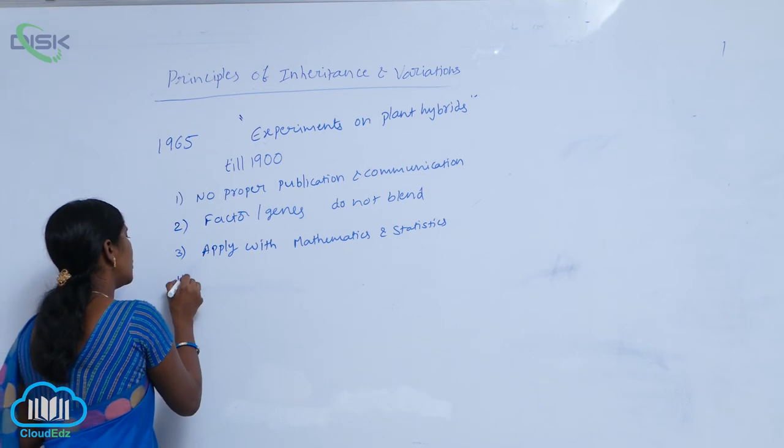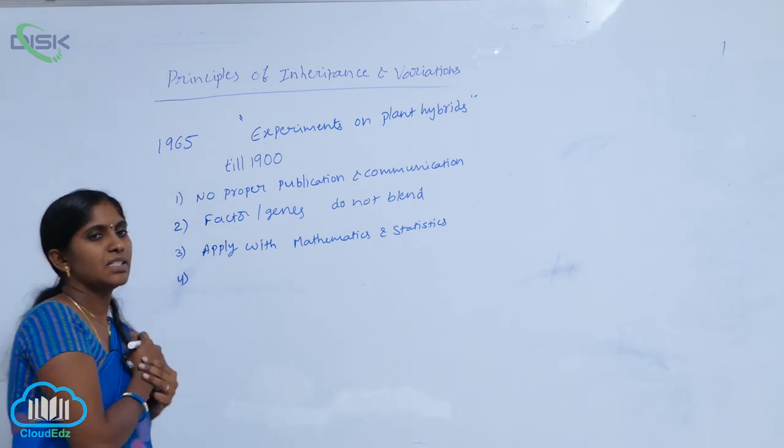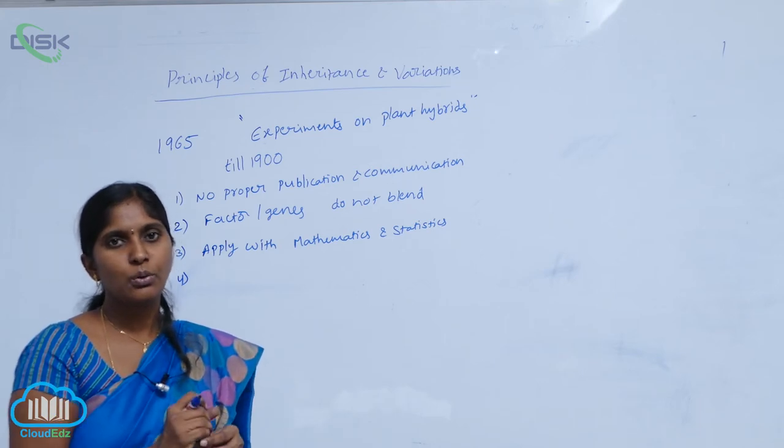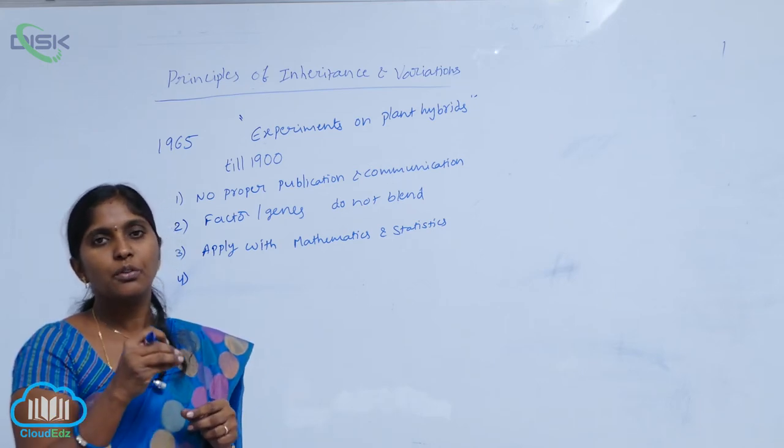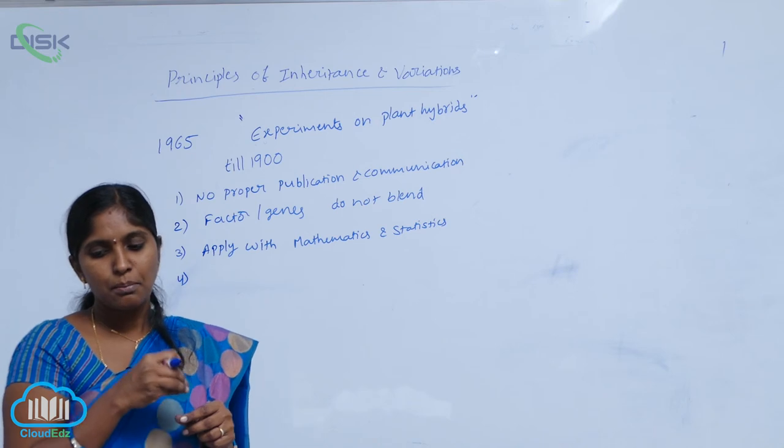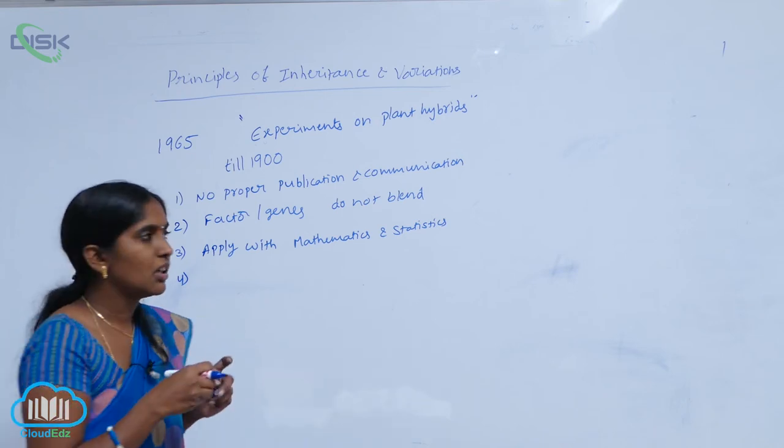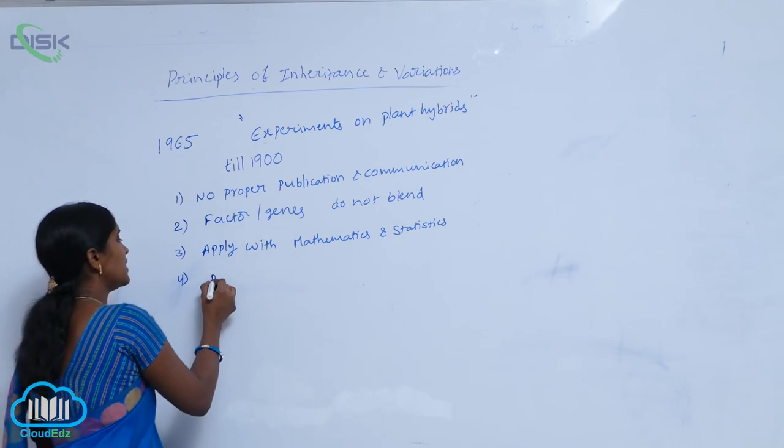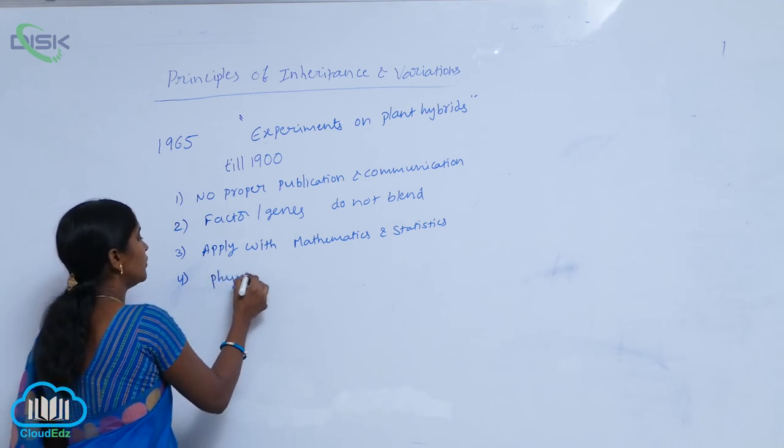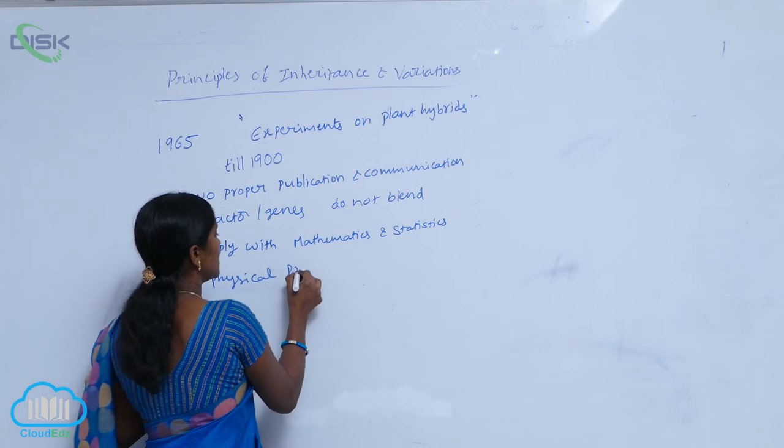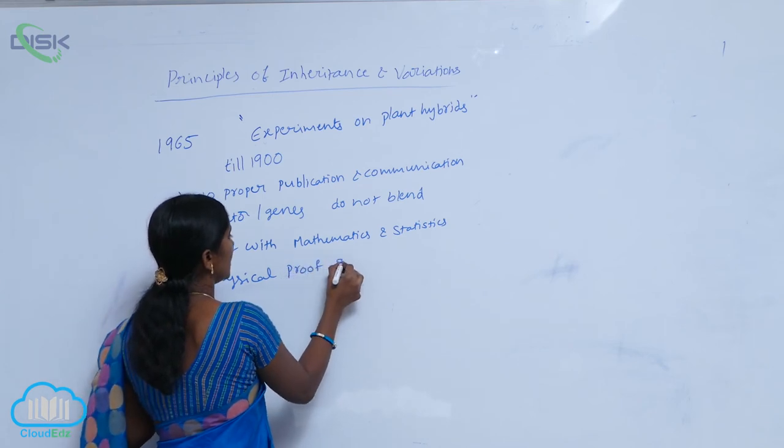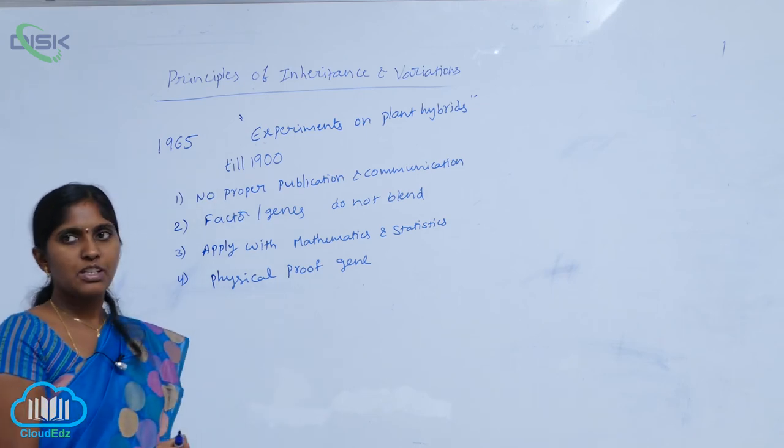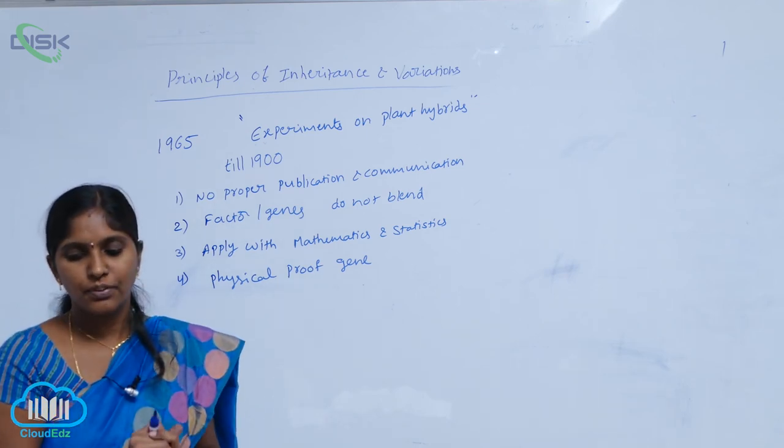Next, another drawback is he said the gene is the fundamental unit of inheritance, but he failed to give the physical proof of gene. Providing physical proof of gene was a failure.